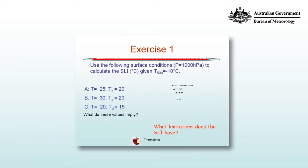For A, the SLI is minus 3.5, and for B, where the surface temperature is 5 degrees Celsius warmer than A, the SLI is minus 6.5. So varying temperature can have a profound impact upon the buoyancy at 500hPa. For C, with cooler temperatures and lower dew points, the SLIs are positive — this is the only case that is stable as measured by the SLI.